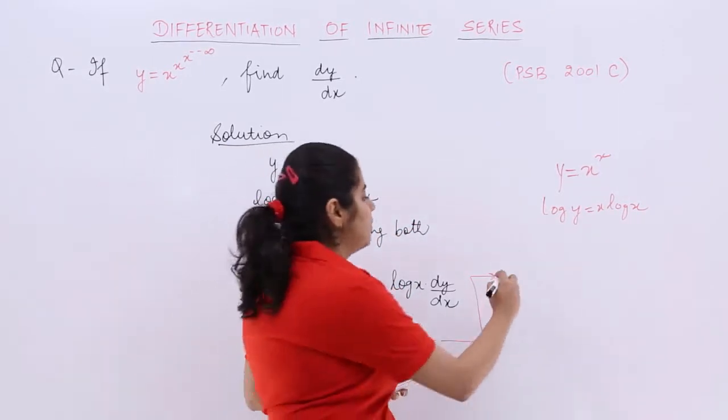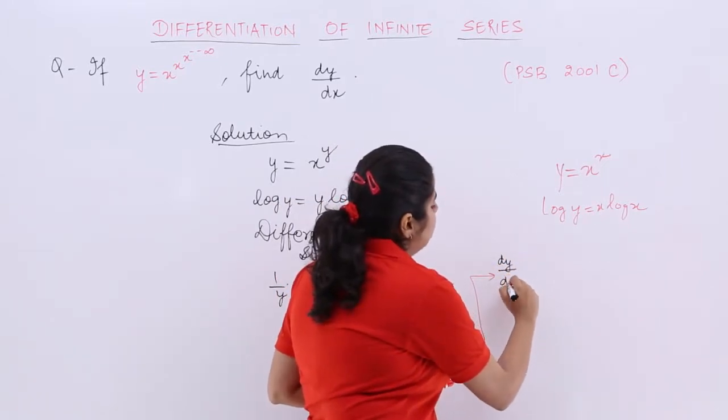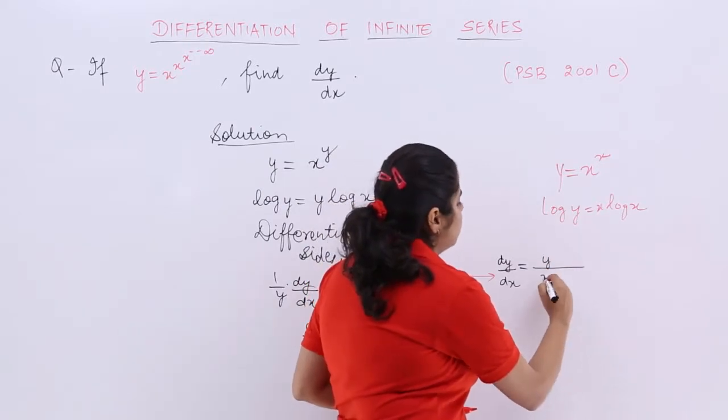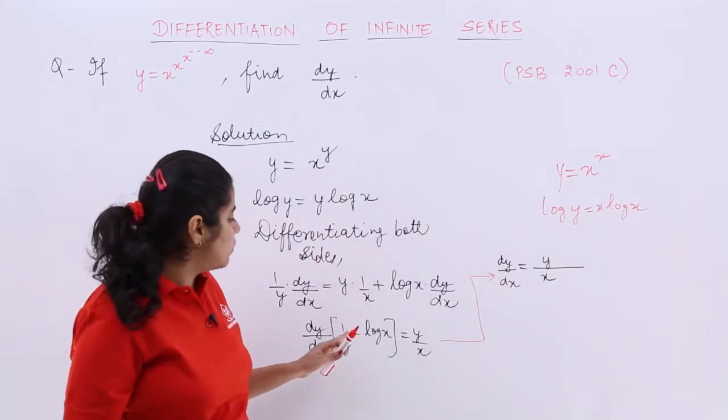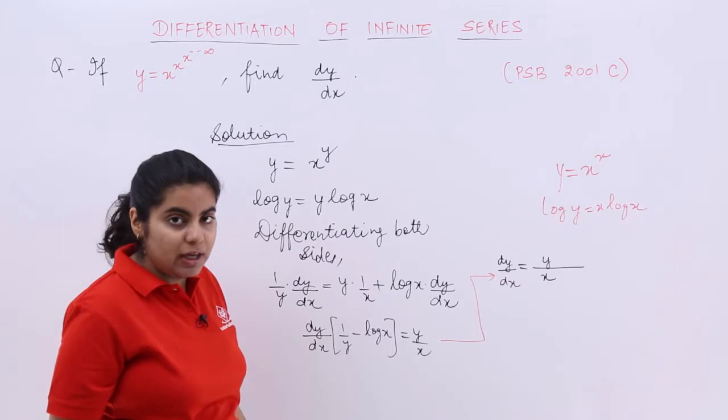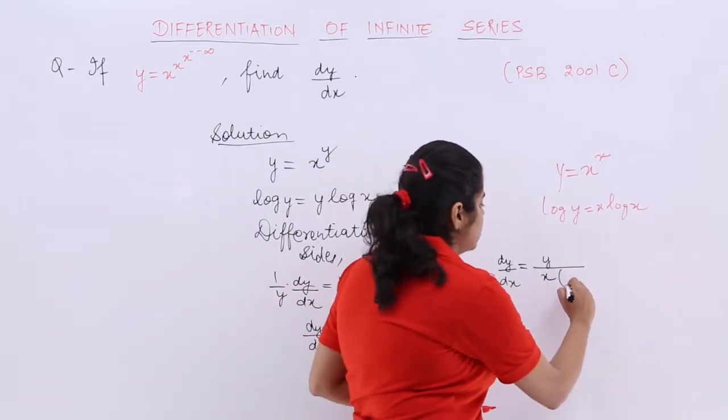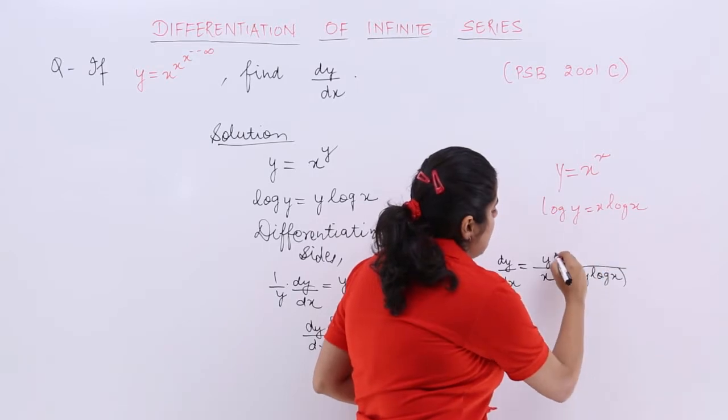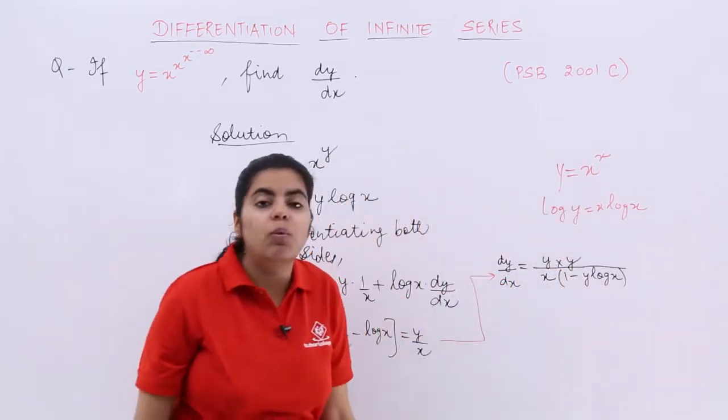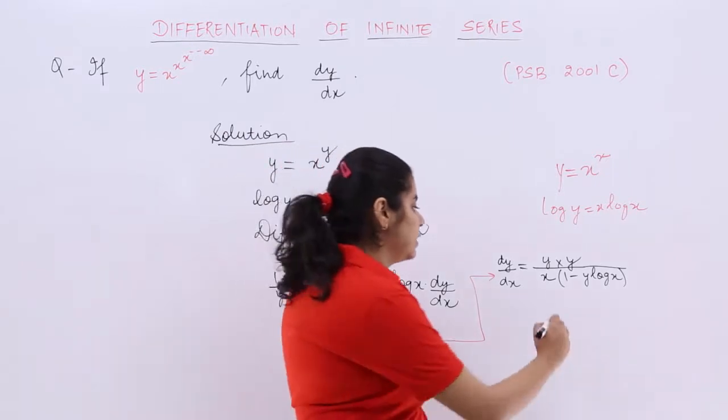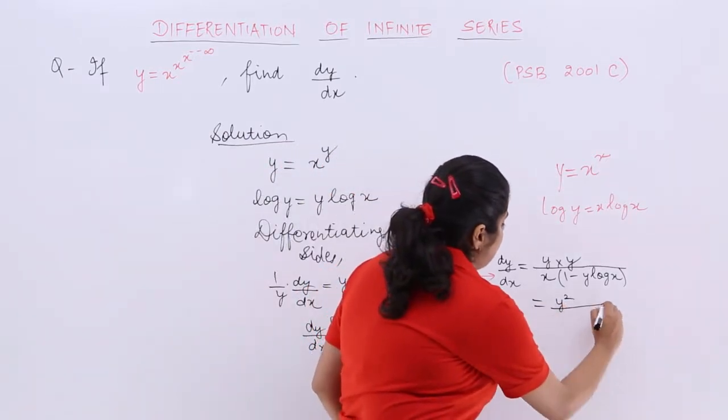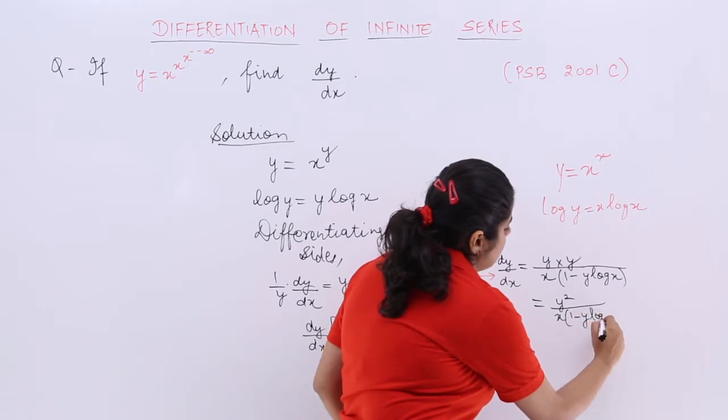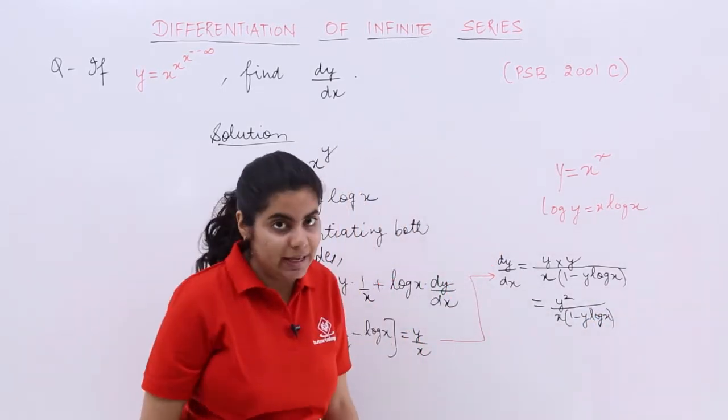What is my value of dy by dx? My value of dy by dx finally is the answer and that is equal to y upon x from this side and from here it is what? 1 minus y log x upon y. So it is 1 minus y log x upon y, that means one more y. Now what is the value of y into y? It is nothing but y squared upon x times 1 minus y log x, and that is my answer of dy by dx.